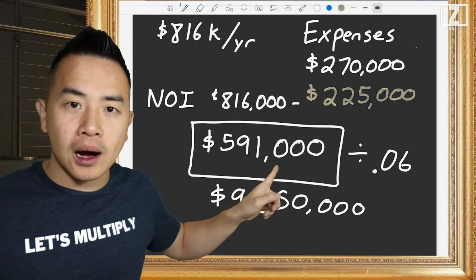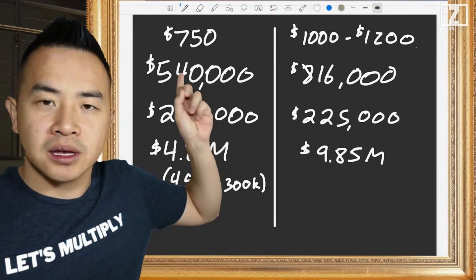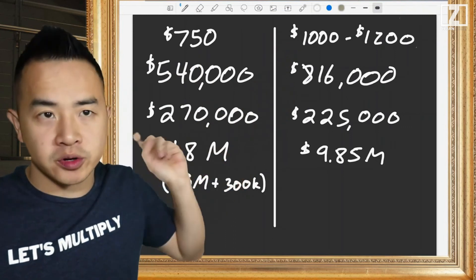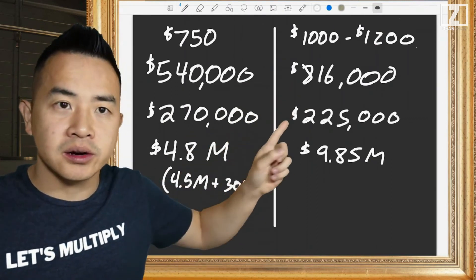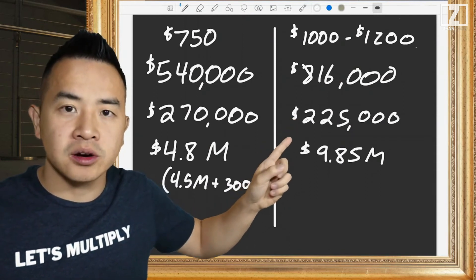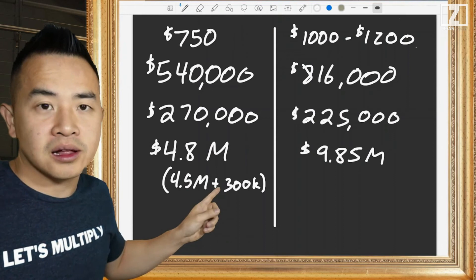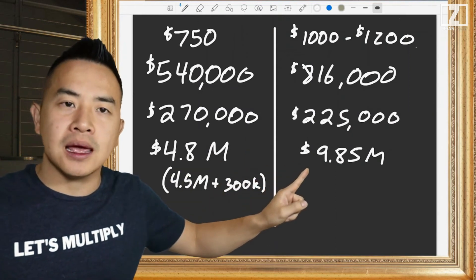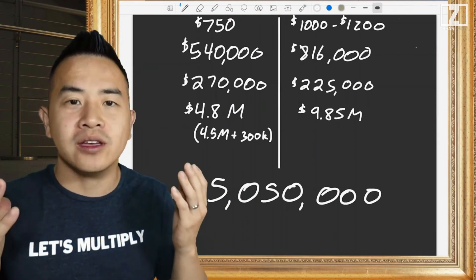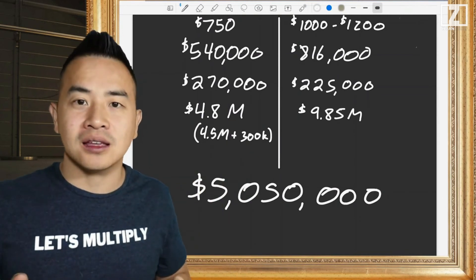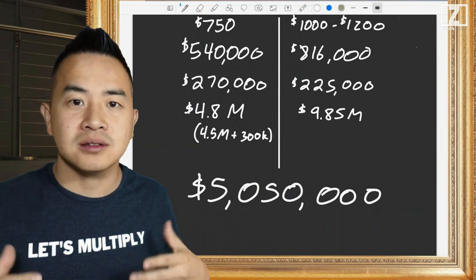Let's look at the side-by-side comparison. Rents went from $750 to $1,000–$1,200 per unit. Income went from $540,000 to $816,000 per year. Expenses dropped from $270,000 to $225,000 per year. Our all-in cost was $4.8 million ($4.5M purchase plus $300K rehab) versus our new valuation of $9.85 million. That is over $5 million of value created by increasing rents and decreasing expenses.